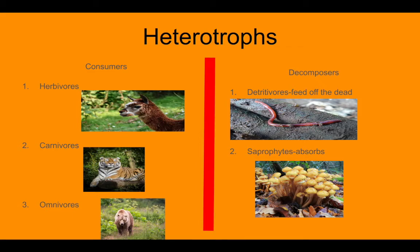Alright. So, you know, we have two types of heterotrophs. Consumers, which are broken down into herbivores, carnivores, and omnivores. And decomposers, which are broken down to the detritophores and the saprophytes.